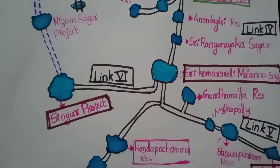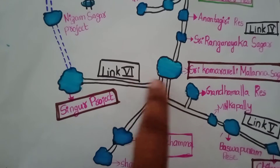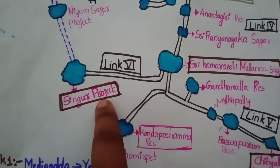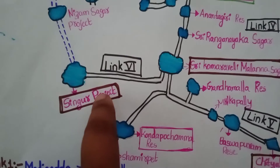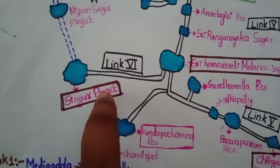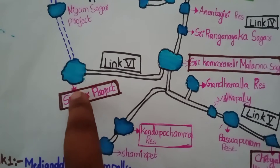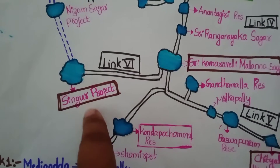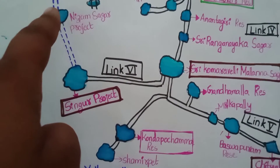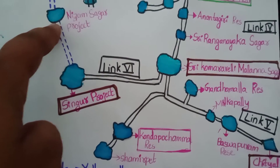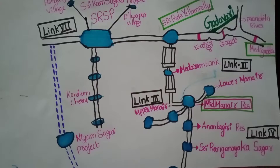Link 6 goes from Sri Kumraveli Mallana Sagar to Chittyal Mandal as well, connecting further distribution points in the project network.